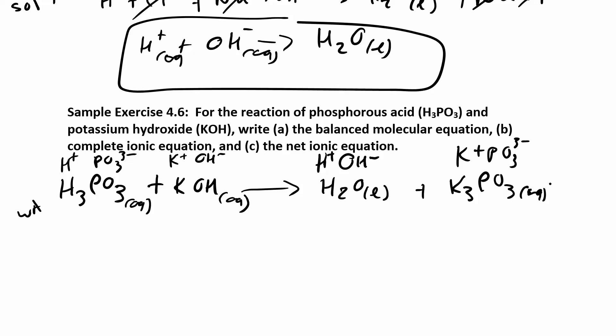Now let's identify the strong electrolytes. H3PO3 is aqueous, but you might be tempted to say it's a strong electrolyte since it's soluble — but it's a weak acid. Weak acids don't get stars; they stay together. KOH is a strong base, so it gets a star. Also, make sure we balance. I need a coefficient of 3 in front of KOH, and that gives me 3 waters as well. With 3 OH−s, I put 3 in front of KOH, giving 3 H+ as well — now we're balanced.